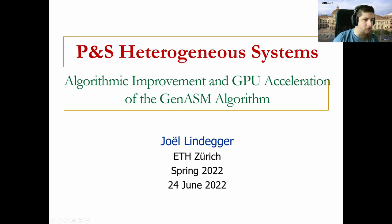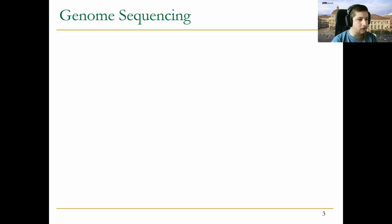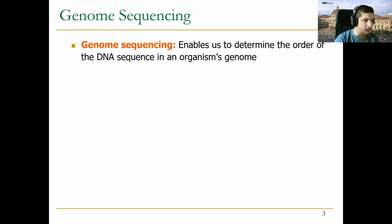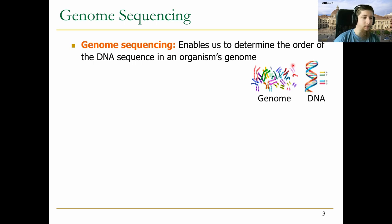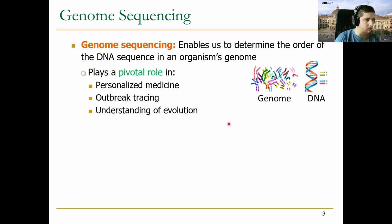Let's start with some background on genome sequencing and analysis. Genome sequencing enables us to determine the order of DNA sequence in an organism's genome. This genome is a set of chromosomes. Humans have 23 pairs of such molecules and each is a long string of ACGT characters twisted in a double helix. These DNA molecules capture a majority of the hereditary information that an organism carries — for example, eye color, susceptibility to certain illnesses, or how well someone reacts to a medication. Analyzing this genome plays a pivotal role in personalized medicine, outbreak tracing, and understanding of evolution.